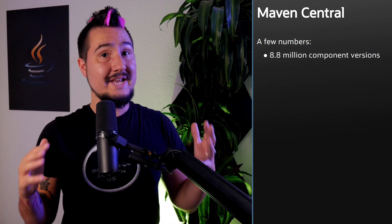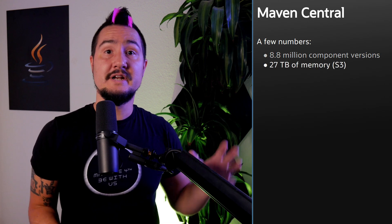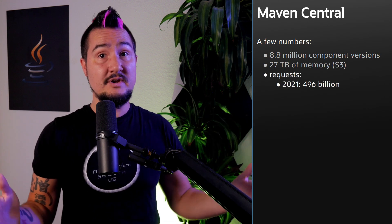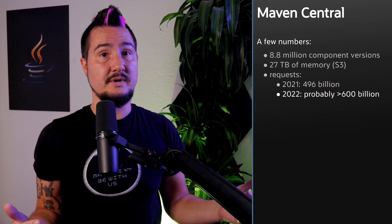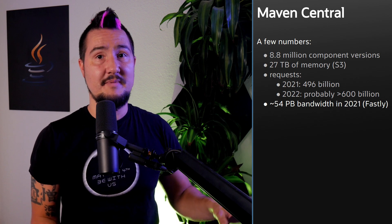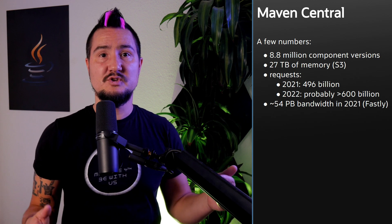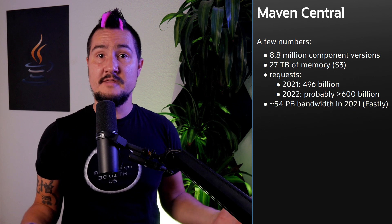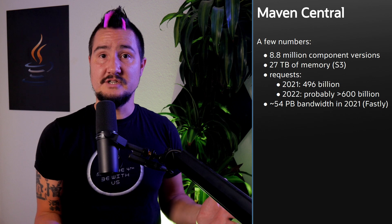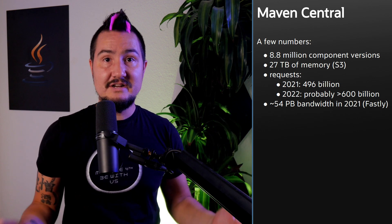Maven Central stores 8.8 million component versions — that's 27 terabytes of storage in an S3 bucket. There were 496 billion requests in 2021, and there'll probably be over 600 billion in 2022. In 2021 that meant about 54 petabytes of bandwidth, much of it routed via Fastly. That's astounding. Amazon heavily discounts the storage costs, and there seems to be a favorable contract with Fastly as well. But other than that, Sonatype foots the bill. They're entrusted by the Apache Foundation to run this service, and they've quietly and reliably done that for years. Hats off to you folks for your amazing work on this essential piece of infrastructure.